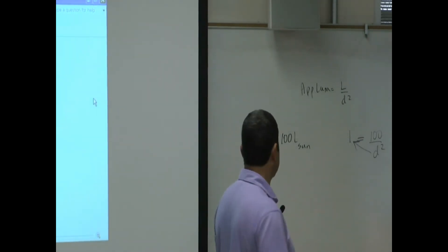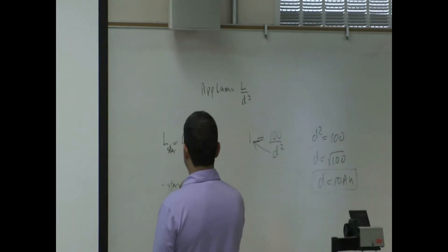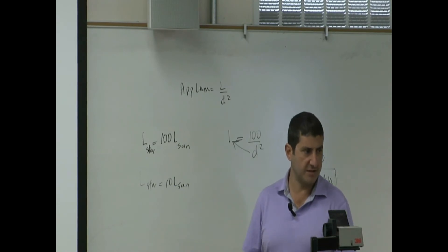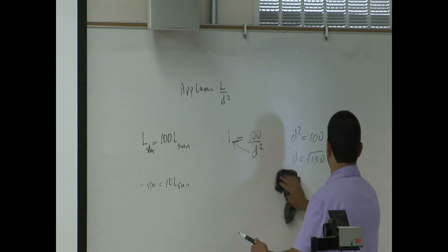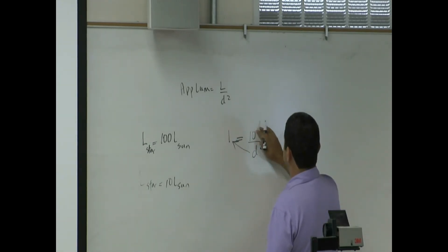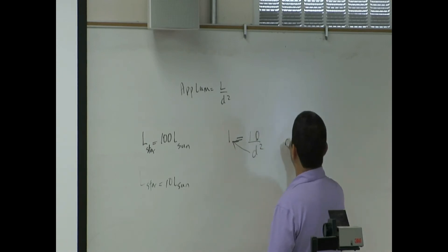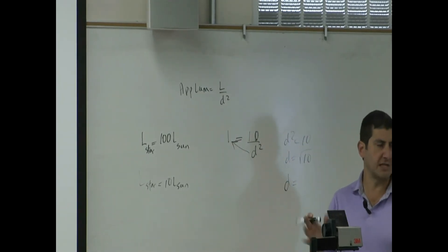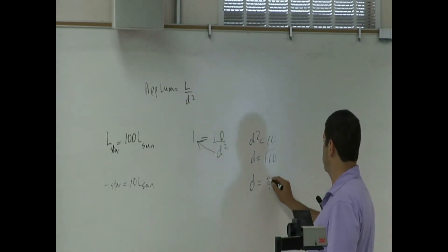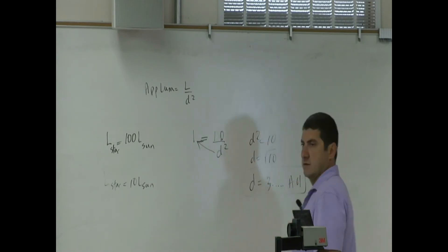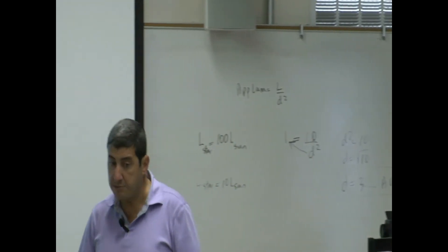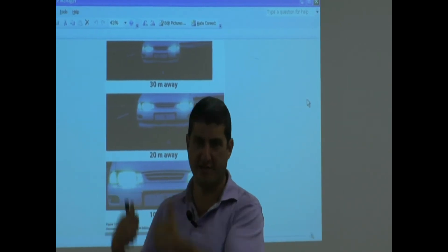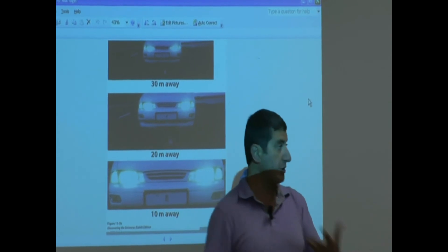If the star was 10 times brighter than the sun, you would set apparent luminosity to 1 and luminosity to 10. Then D² = 10, so D = √10, which is about 3-point-something AUs. So if a star is 10 times brighter, you need to be about 3 AUs away for the apparent luminosity to match that of our own sun. This equation is pretty useful in that sense.